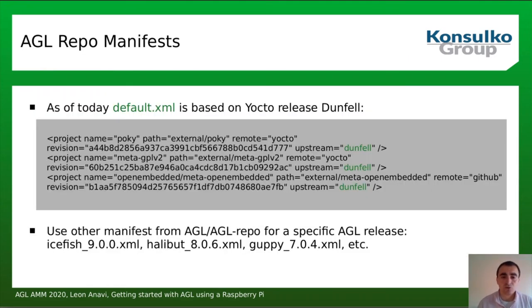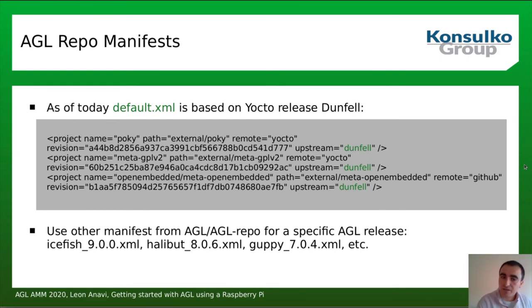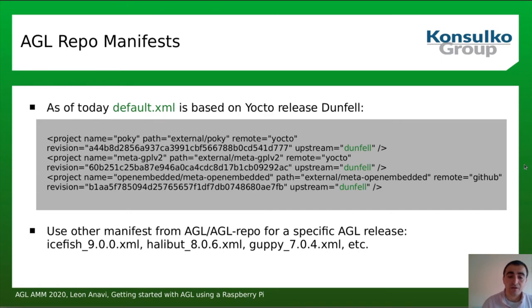The Yocto Project releases twice per year. The Dunfell release is the latest stable release, from April, and as of now AGL master is based on Dunfell. This is a code snippet from the default manifest used by the Repo tool for the Yocto Project — it uses Poky and all other layers based on Dunfell. If you want to target a specific stable AGL release instead of master, you should specify a different manifest — here is a short list of manifests for previous releases such as Icefish, Halibut, Guppy, and so on.